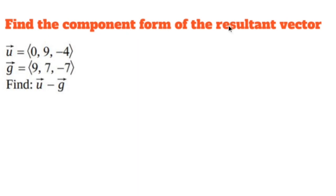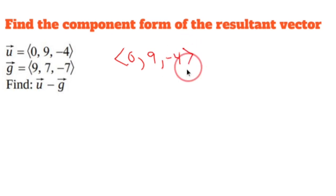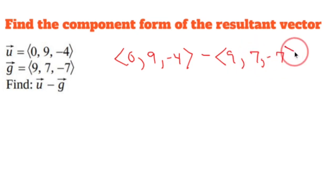Find the component of the resultant vector. We have 3D stuff going on here, and all I'm doing is U minus G. So zero, nine, negative four, minus nine, seven, negative seven.